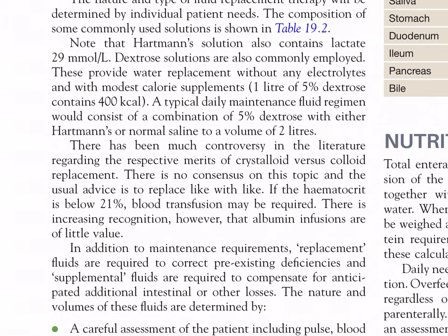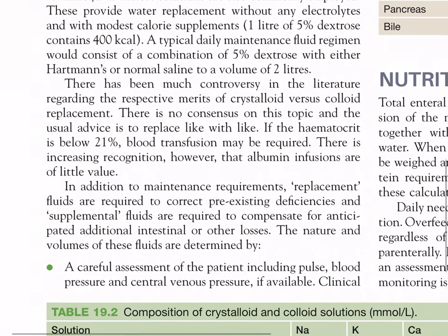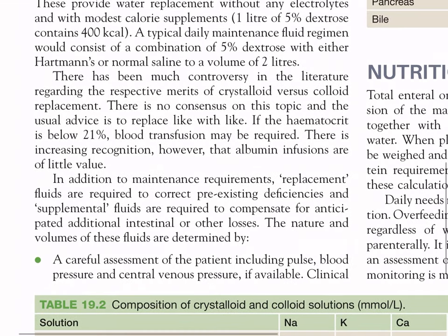If the hematocrit is below 21%, blood transfusion may be required. There is increasing recognition that albumin infusions are of little value. In addition to maintenance requirements, replacement fluids are required to correct pre-existing deficiencies, and supplemental fluids are required to compensate for anticipated additional intestinal or other losses. The nature and volumes of these fluids are determined by careful assessment including pulse, blood pressure, and central venous pressure if available.